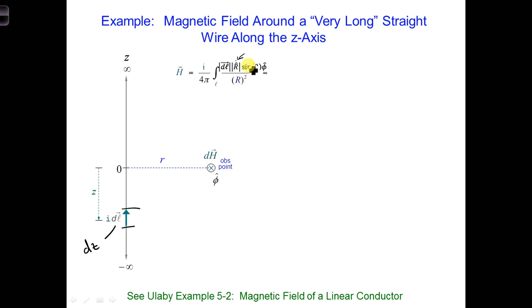The magnitude of r hat here is 1. The r vector goes from our wire segment to the observation point, so that's r.